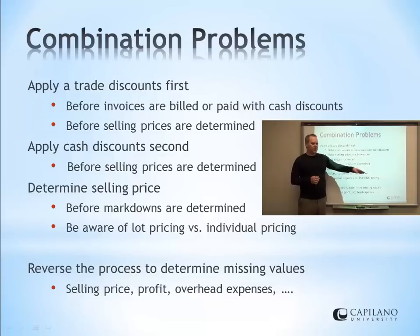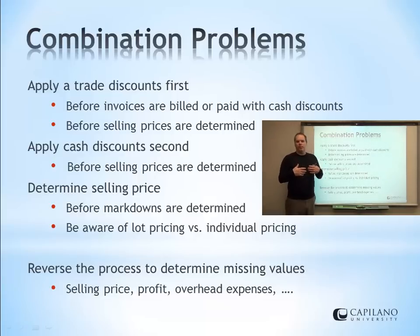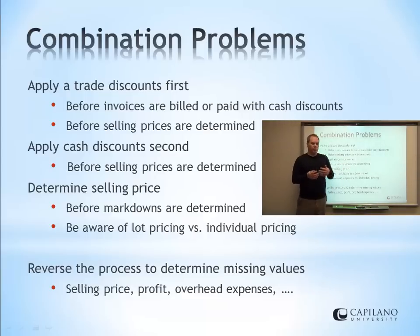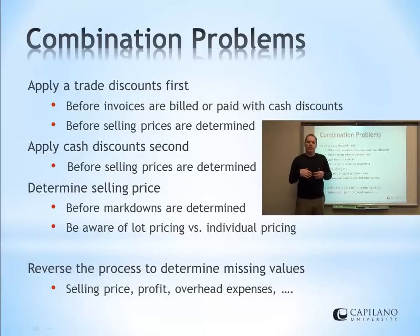Before selling prices are determined, we're going to get a trade discount. The second thing that applies is cash discounts — at some point, we're going to get a better deal than the invoice price. We're going to get, say, $2 off an invoice; that's a cash discount. So before the selling price is determined, we may get a cash discount. Then we return to selling price and apply our markup based on whatever margin heuristics we're using.